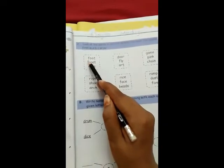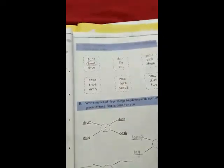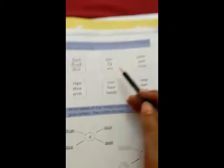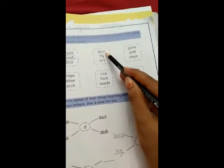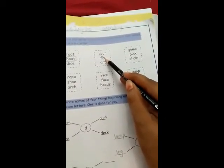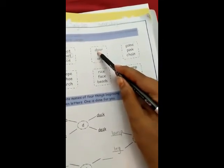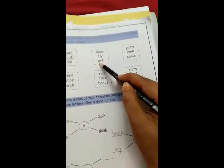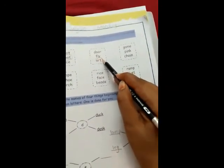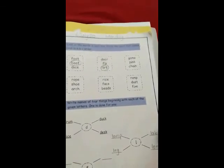The second example: door D-O-O-R, fly F-L-Y, art A-R-T. Which comes first in alphabets? A comes first. Yes. Now we have to circle A-R-T. Now complete this page in same method.